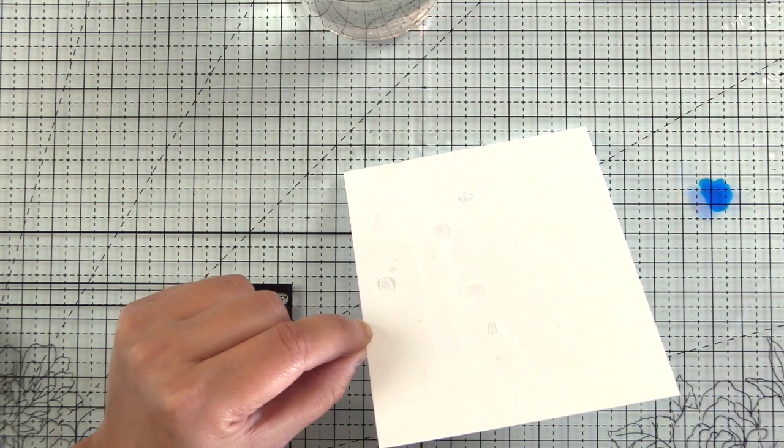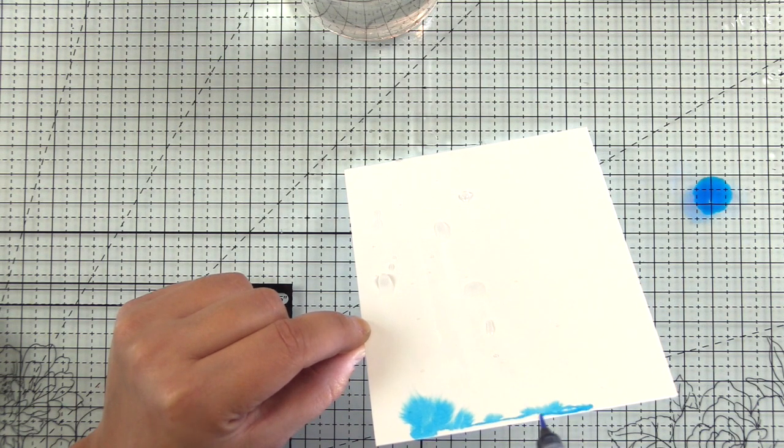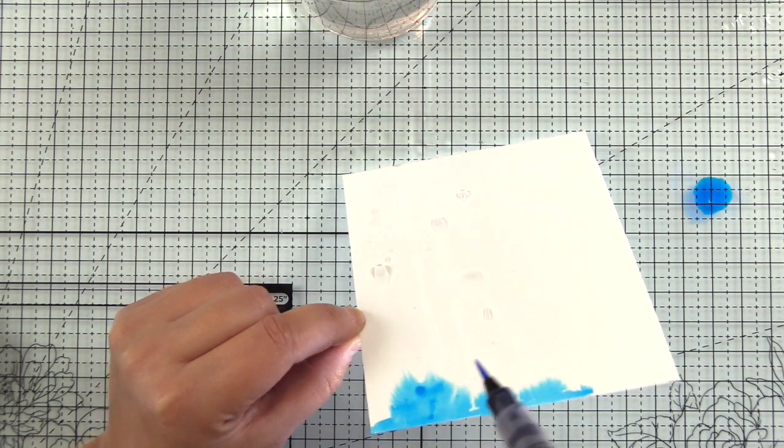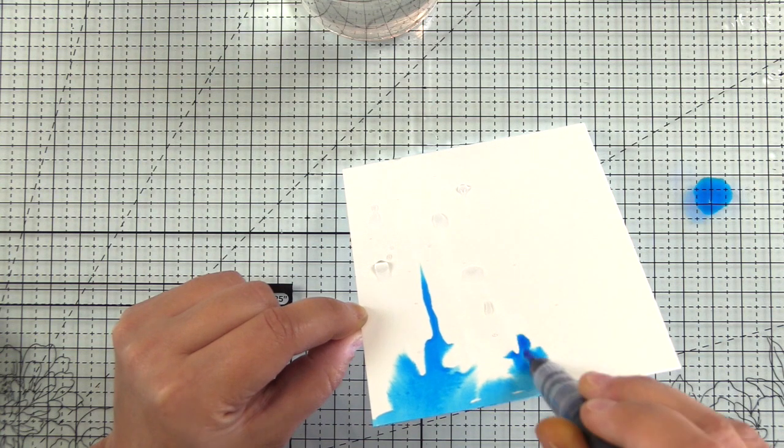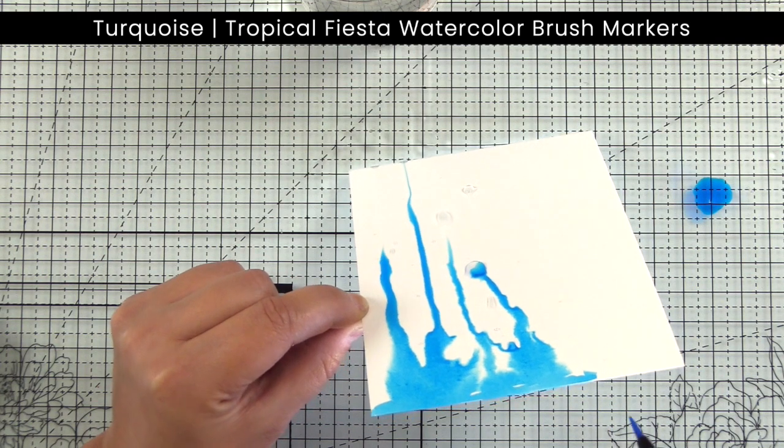This will also help the watercolor brush marker from just completely absorbing into the cardstock. I want it to still be able to move, so having the water on the paper is going to help with getting these pigments to move down the card.